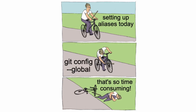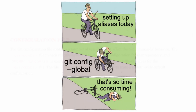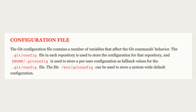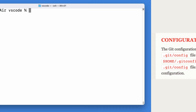To begin with, if you don't want to run git config every single time, you can open the global git config file with your favorite editor. This file is called .gitconfig. From here we can easily set them up.